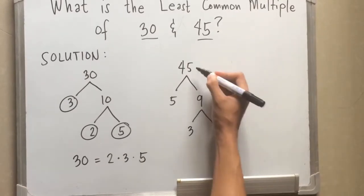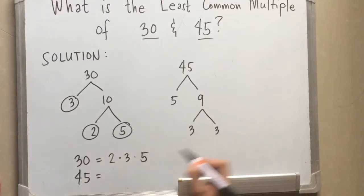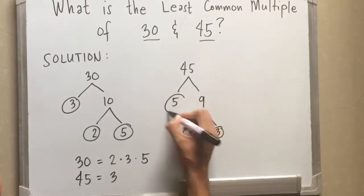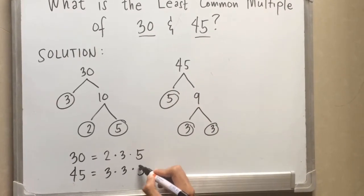So by inspection again the factors for 45 are 3, 3 and 5. So we have 3 times 3 times 5 is equal to 45.